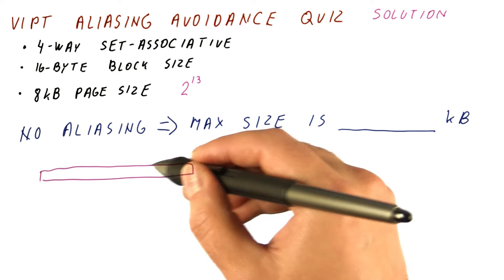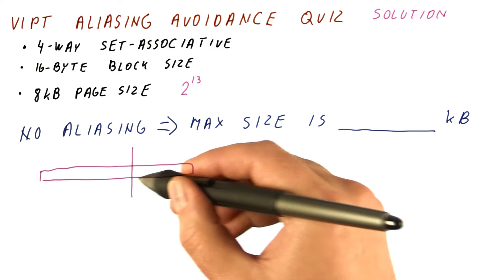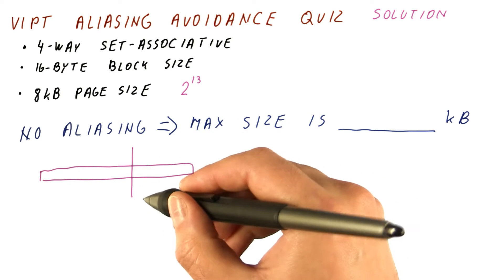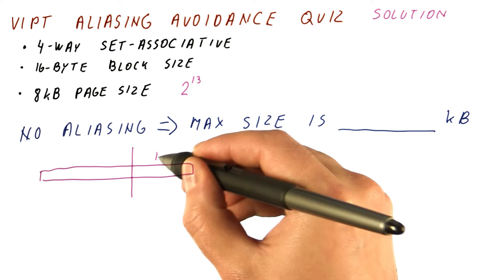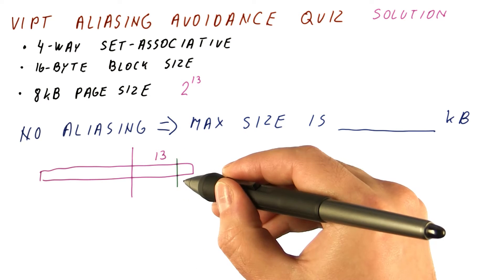In the address breakdown for accessing the cache, that means that our index and offset for the cache need to fit in 13 bits. The 16 byte block